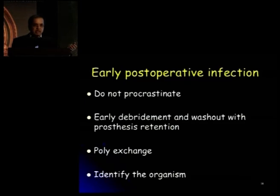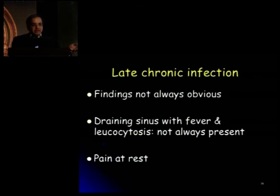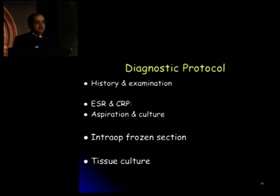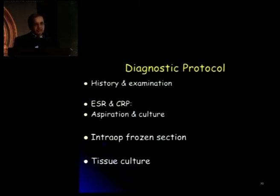Late chronic infection is a problem because the findings are not always obvious — they may or may not have a draining illness and may not present with any systemic symptoms. But most do have pain at rest, which is a recurring feature. The diagnostic protocol includes history and examination. The first thing is to send patients for ESR and CRP, and if these are positive — especially if both are positive — certainly aspirate the knee or hip for culture. This must be done in a sterile manner, preferably under X-ray control if it is a hip. The knee can be done on an outpatient basis.